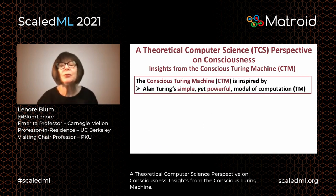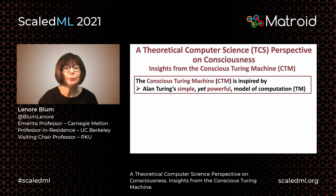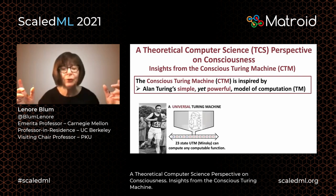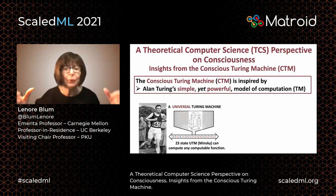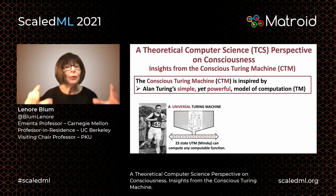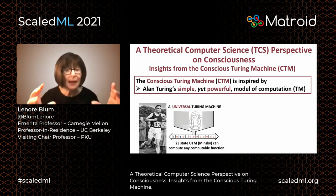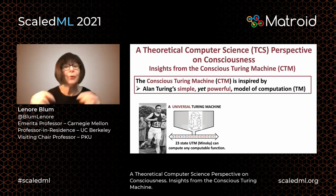The Conscious Turing Machine is inspired in part by Alan Turing's simple yet powerful model of computation. Here we have a 23-state universal Turing machine that can compute any computable function. In other words, what you can compute in the cloud or in a supercomputer can be computed in this machine. On the other hand, you can get your head around this universal Turing machine — you can prove what it can compute, what it cannot compute. Much harder to do in the supercomputer or on the cloud.